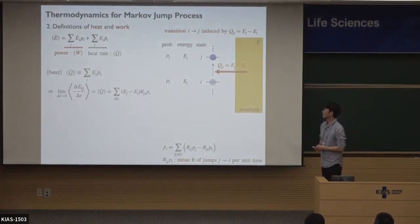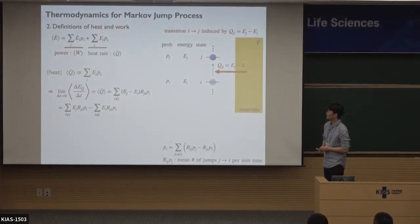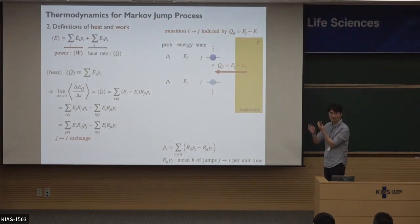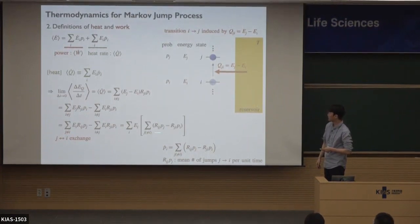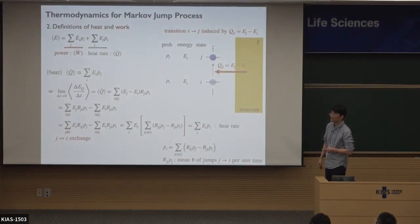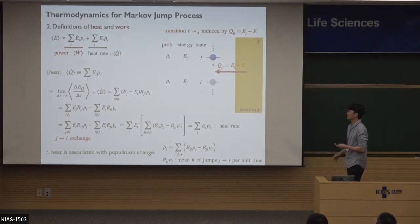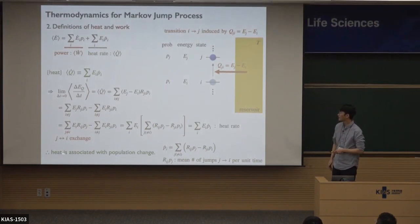Now divide this summation into two parts. The indices I and J are dummy indices, so we can exchange I and J. By exchanging the dummy indices and summing again, we obtain this equation. From the master equation, this is nothing but P-dot_I. It means the heat rate is given by the population change — in this Markov jump process, heat is associated with population change.